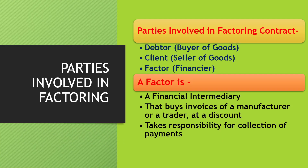Parties involved in factoring: there are 3 parties involved in a factoring contract. First, the debtor, that means the buyer of goods — the one who has purchased goods or services on credit and has to pay once the credit period gets over.